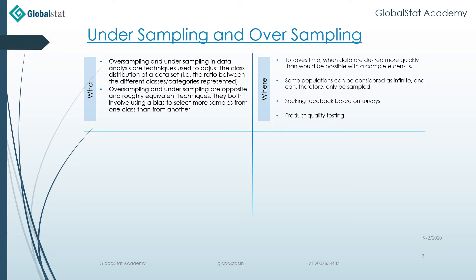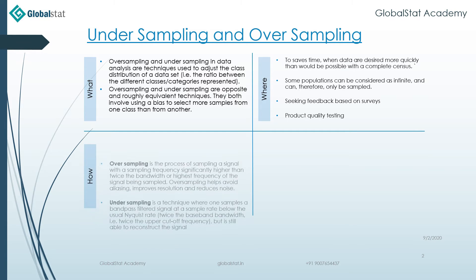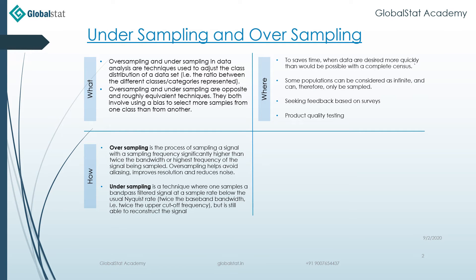The product quality testing. Oversampling is the process of sampling a signal with a sampling frequency significantly higher than twice the bandwidth or highest frequency of the signal being sampled. Oversampling helps avoiding aliasing, improves resolution, and reduces noise.